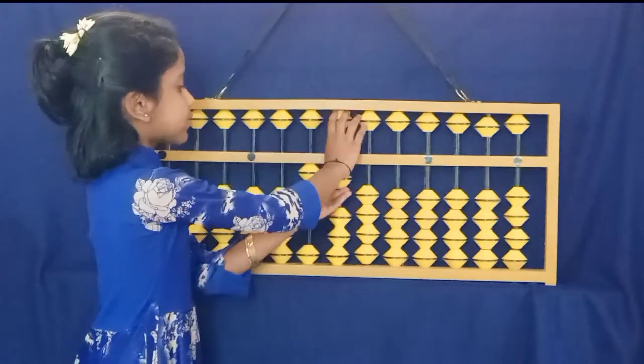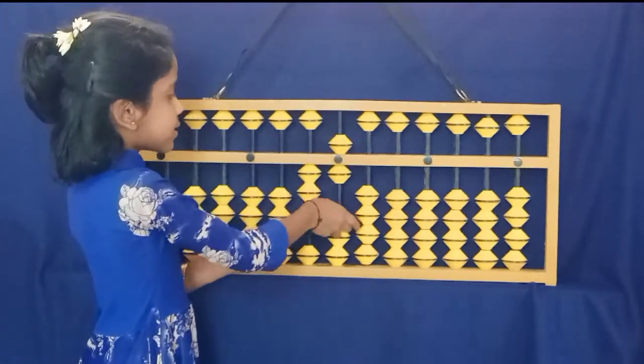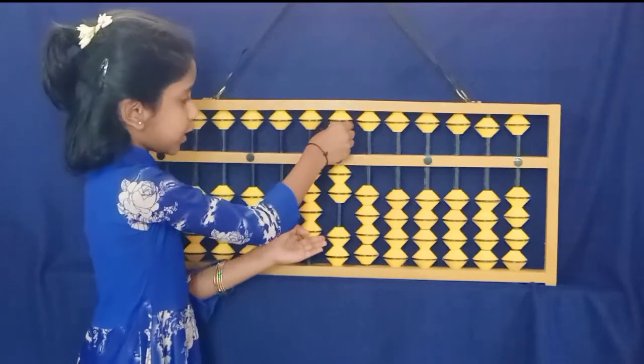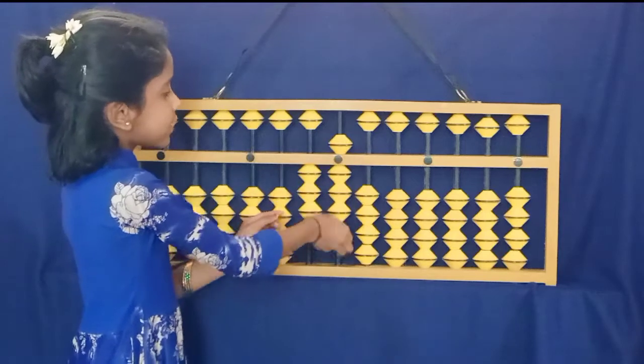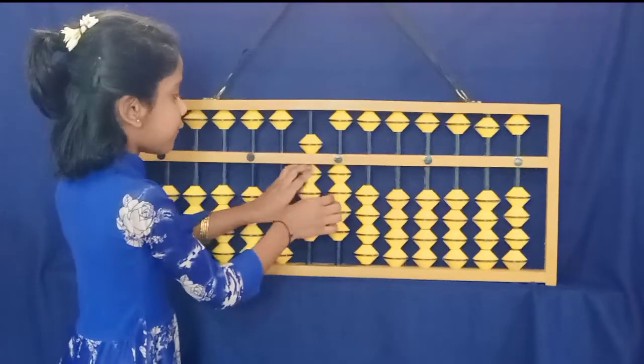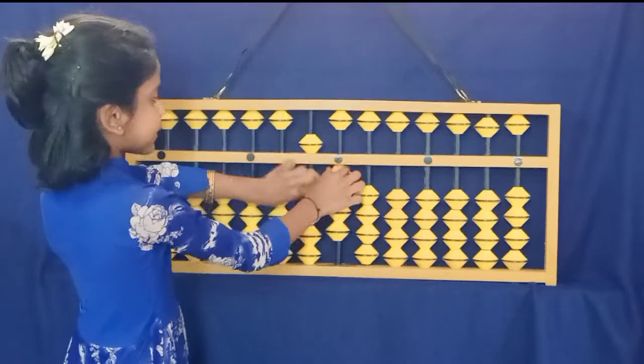6-6s are 36, 6-7s are 42, 6-8s are 48, 6-9s are 54, 6-10s are 60.